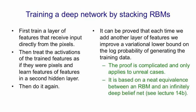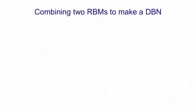The proof is based on a neat equivalence between a restricted Boltzmann machine and an infinitely deep belief net. Here's a picture of what happens when you learn two restricted Boltzmann machines, one on top of the other, and then combine them to make one overall model, which I call a deep belief net.